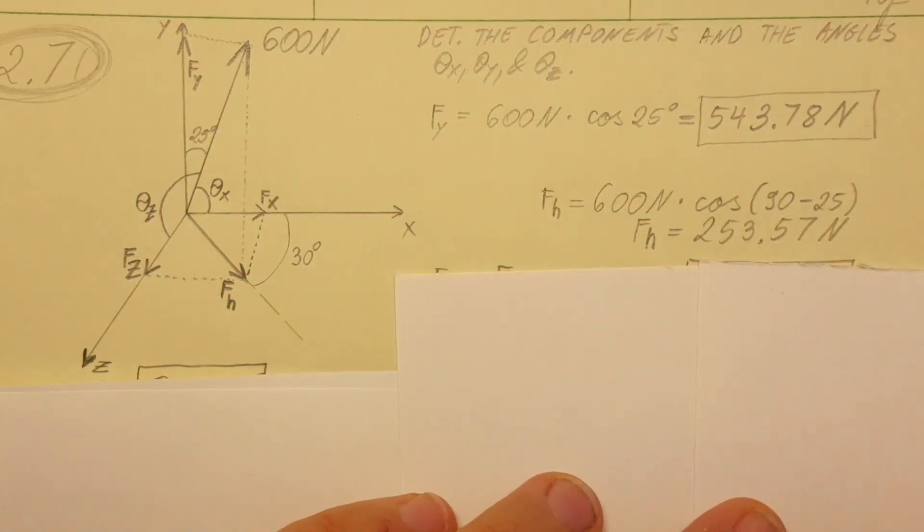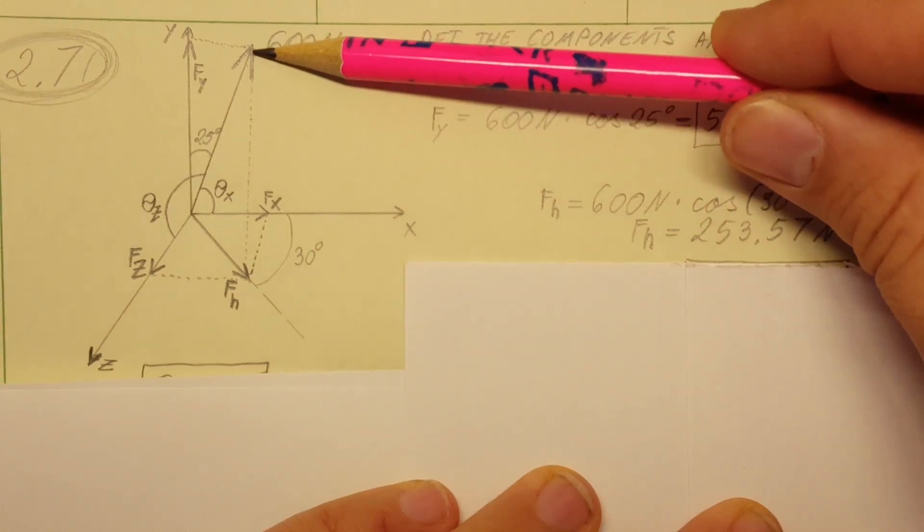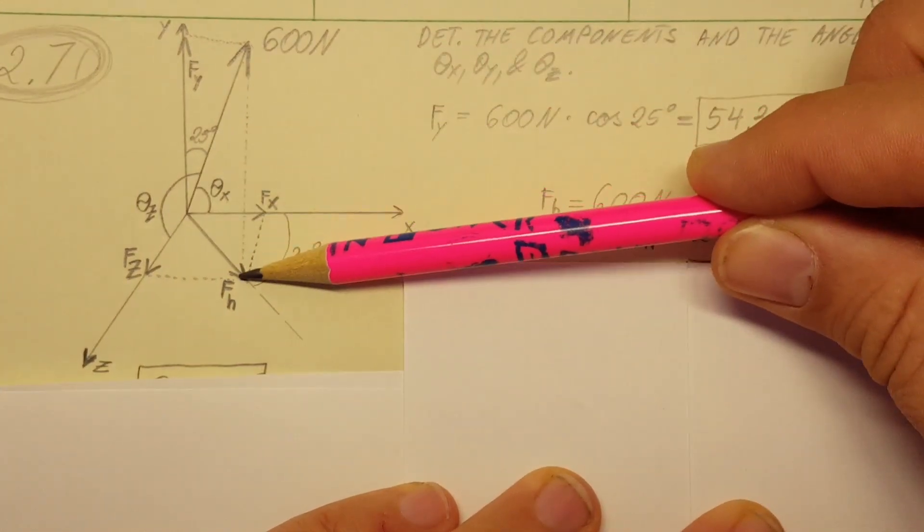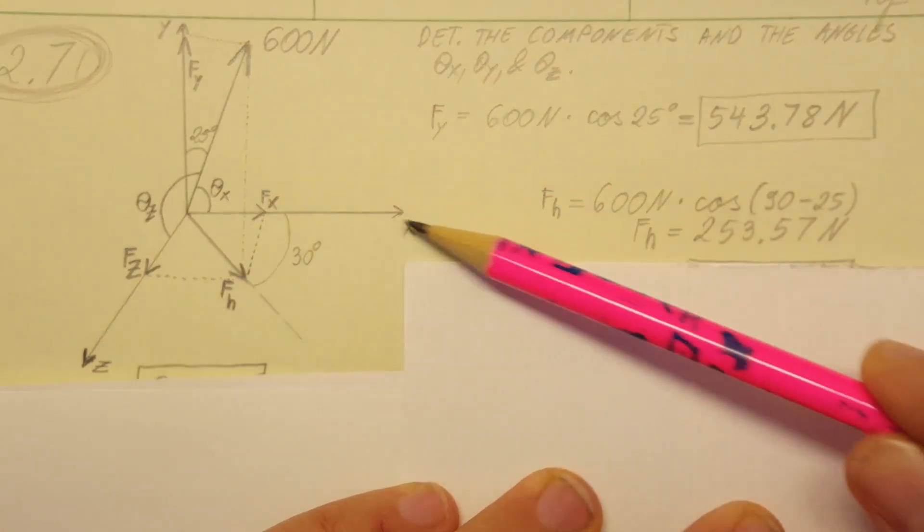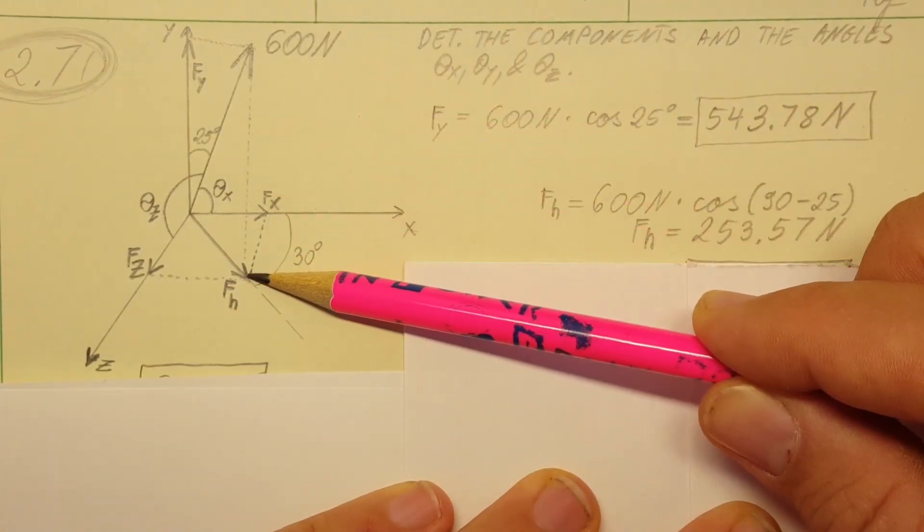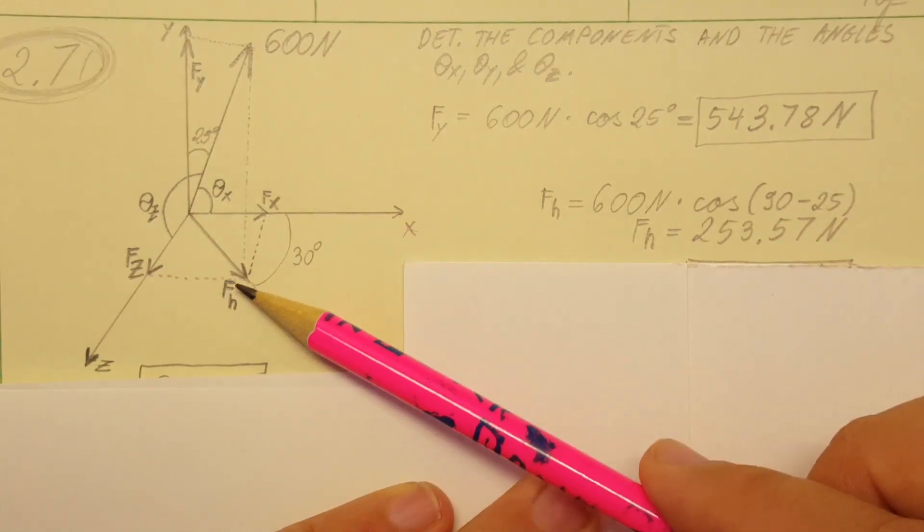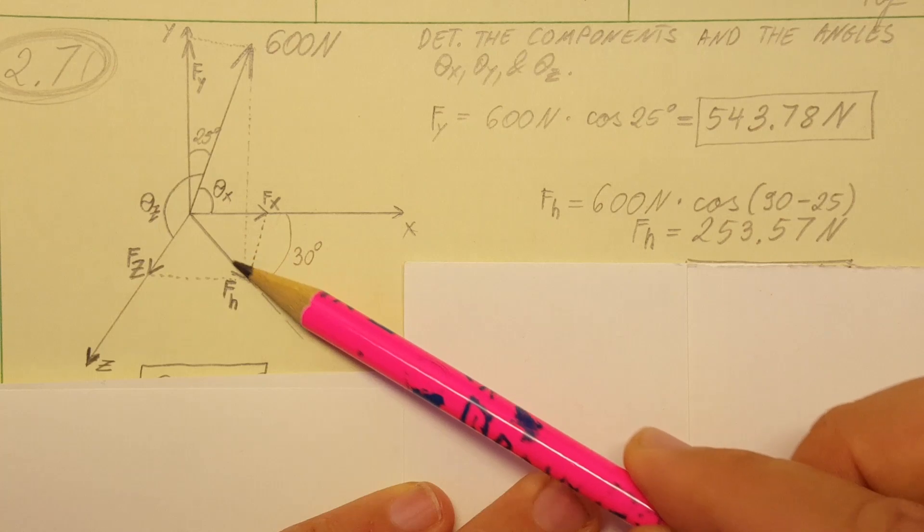Now let's go ahead and find fh, our intermediary value that will help us find fx and fz. What we do is we drop it down into the x and z plane, and once it's done here we'll be able to split it again and get our other two components.